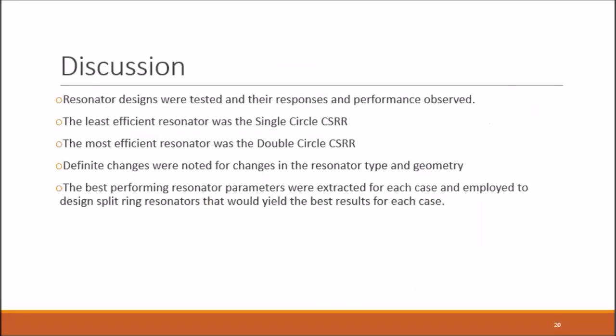Finally, the resonator designs were tested and the results and responses were observed. The least efficient resonator was the single circle complementary split ring resonator. The most efficient resonator was the double circle complementary split ring resonator. Definite changes were noted for changes in the resonator type and geometry. The best performing resonator parameters were extracted for each case and employed to design a split ring resonator that yields the best results.